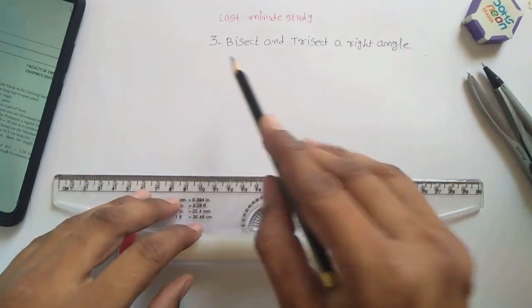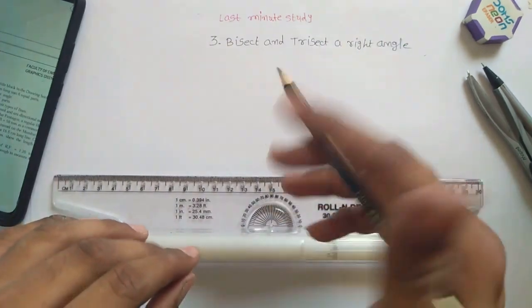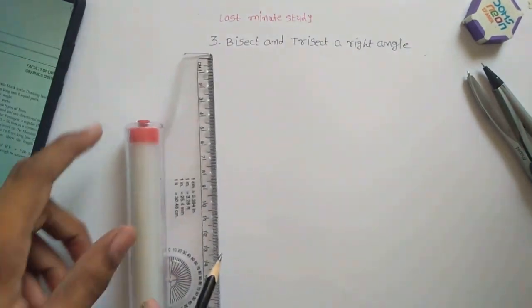Third problem of the first set is bisect and trisect a right angle. It's very easy. You might have learned this in 11th or 12th standard mathematics.